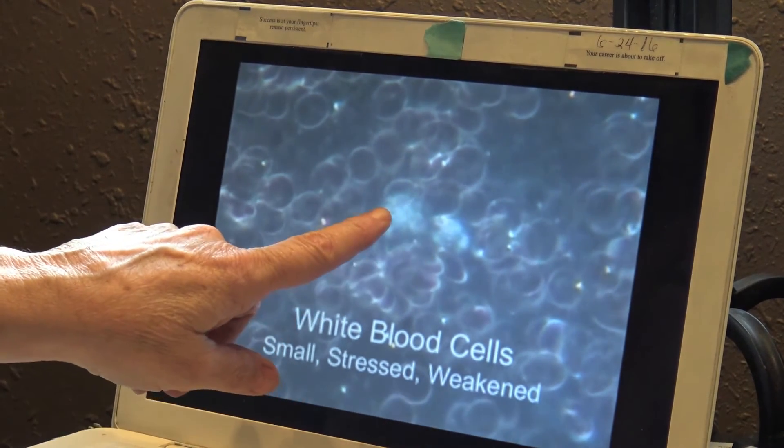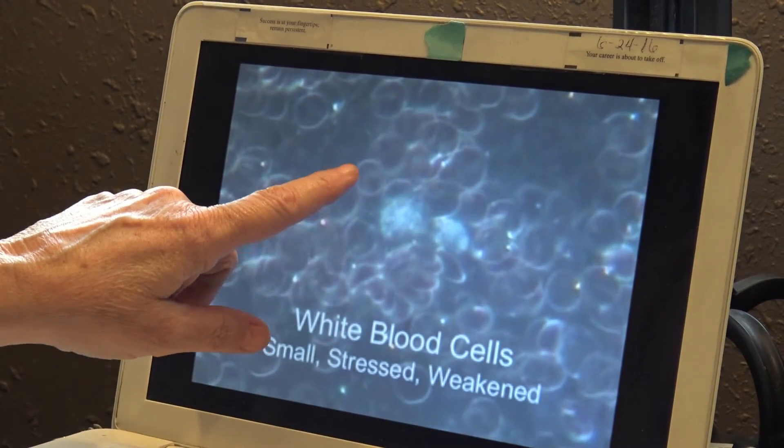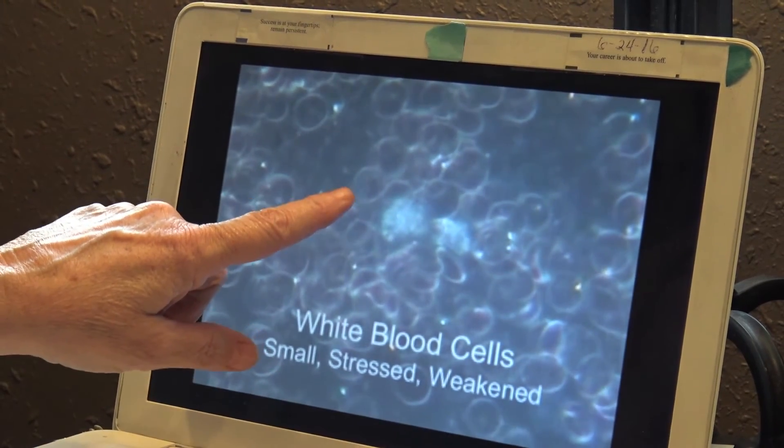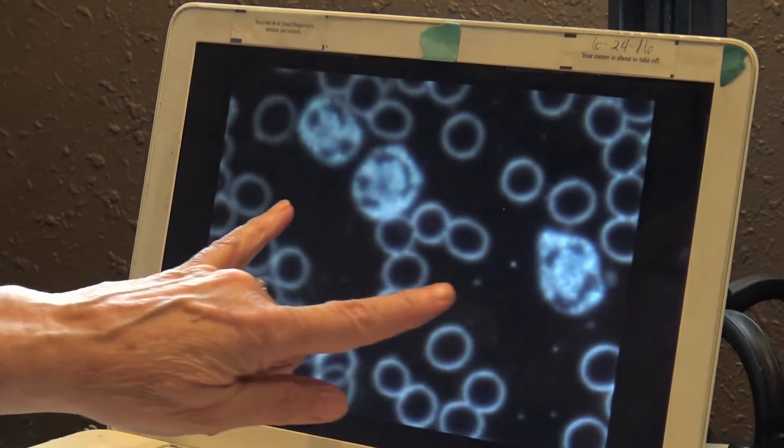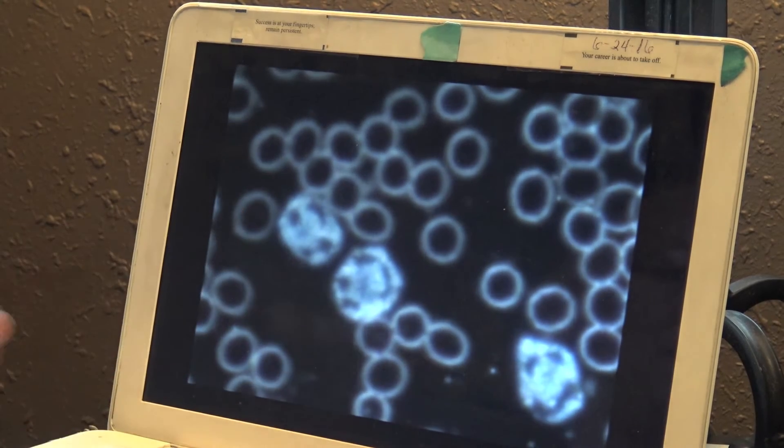Now, these are the white blood cells right here. And look at the size of these compared to the red blood cells. It's how small they are. This one's a little bit larger, but look how big they are now after one session with plant music.